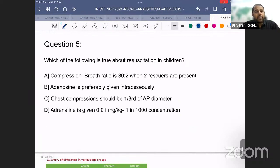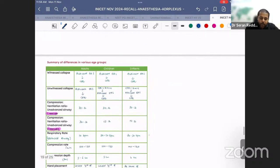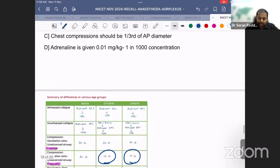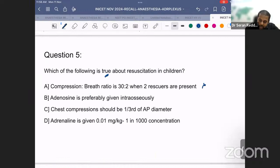The next question: Which of the following is true about resuscitation in children? Compression to breath ratio is 30:2 when two rescuers are present. Adrenaline is preferably given intraosseously. Chest compression should be one-third of AP diameter. Adrenaline is given 0.01 milligrams per kg in 1:1000 concentration. We have discussed this. We need one statement which is true. When there is one rescuer, it is 30:2. When there are two rescuers in adults, it is 30:2. But for children, it is 15:2. This is a wrong statement.